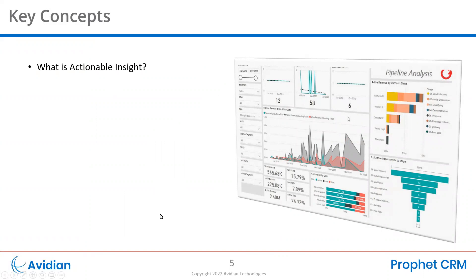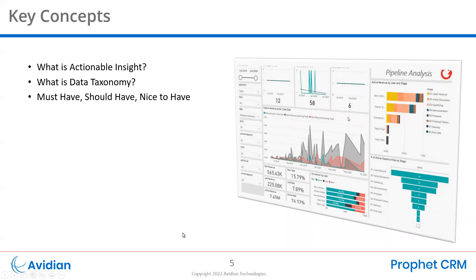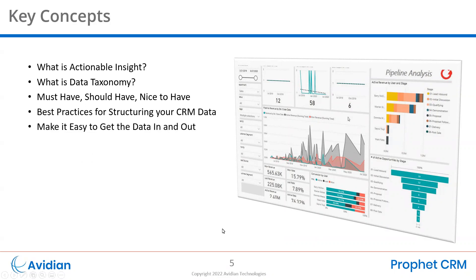Actionable insight is basically using your data in such a way that you can take action on it. Data taxonomy is the ability to classify and categorize data so that you can understand what's going on better. Some data is must-have to make the system useful, some you should have if you can get it, and others are just nice to have. I'll be going through best practices for structuring your data in detail, including making it easy to get data in and getting it out in the form of reports and dashboards.